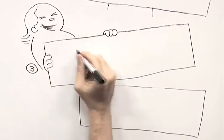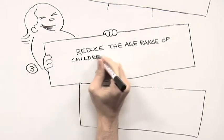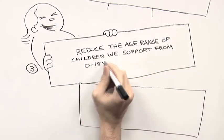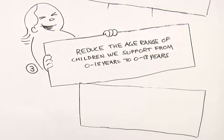Thirdly, we realise that we need to reduce the age range we support from 0 to 18 years to 0 to 13 years, as there are specialised service providers who run specific programs to meet many of the needs teenagers identified in the research.